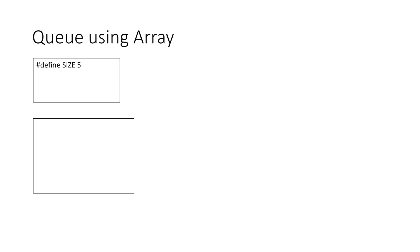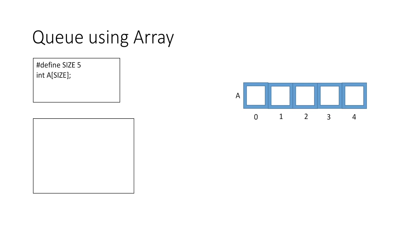So let's implement queue using array. Firstly we need to define the size of the array. Suppose we define size as 5 and then we create an integer array of 5 elements. For this example I am taking the type as integer but you can define an array of any type. So now we have created a global array of 5 elements which is initially empty. Next we will declare our two variables front and rear and initialize them as -1, which means that initially the queue is empty.